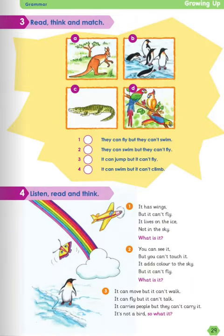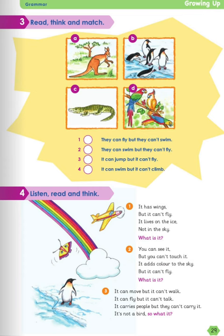Next is read, think and match. Let's see this picture together. Picture A is a kangaroo, picture B is penguins, picture C is a crocodile, and picture D is parrots. So, number 1: they can fly, but they can't swim — it's D. Number 2: they can swim, but they can't fly — the answer is B. Number 3: it can jump but it can't fly — the answer is A. And the last one: it can swim but it can't climb — C.